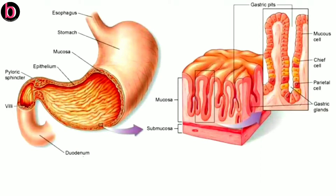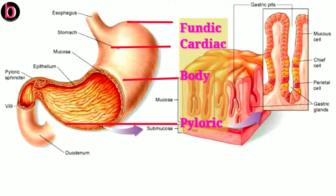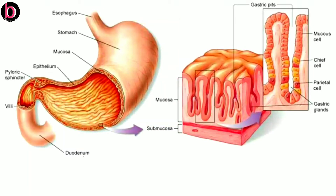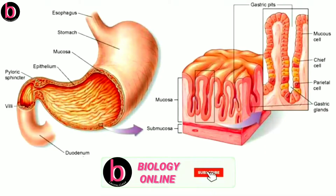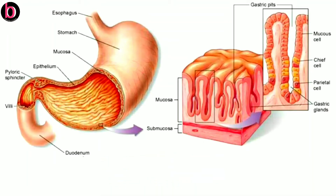When we discuss the structure of the human stomach, we know it is a J-shaped structure and there are four parts: cardiac, fundic, body, and pyloric. The cardiac is the anterior part, the fundic and body form the middle part, while the pyloric is the posterior part of the stomach. In this diagram you can clearly see the anatomical view of the stomach.